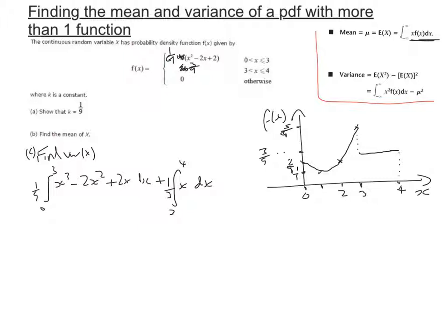If we integrate these, the first one we're going to have x to the power of 4 over 4, minus 2x cubed over 3, plus 2x squared, between 0 and 3. And for the second part, we have to add on a third of x squared over 2, between 3 and 4.